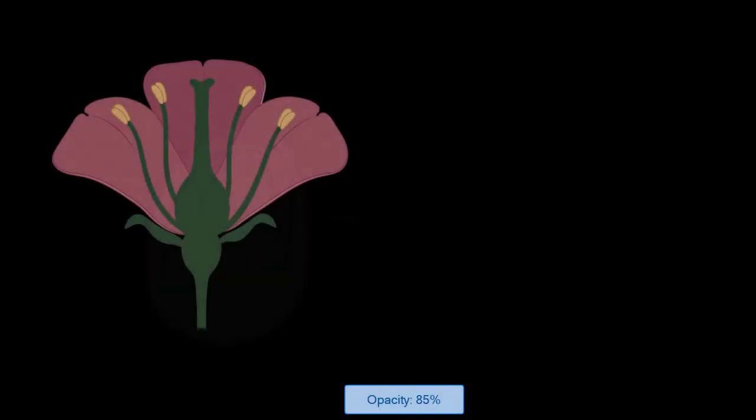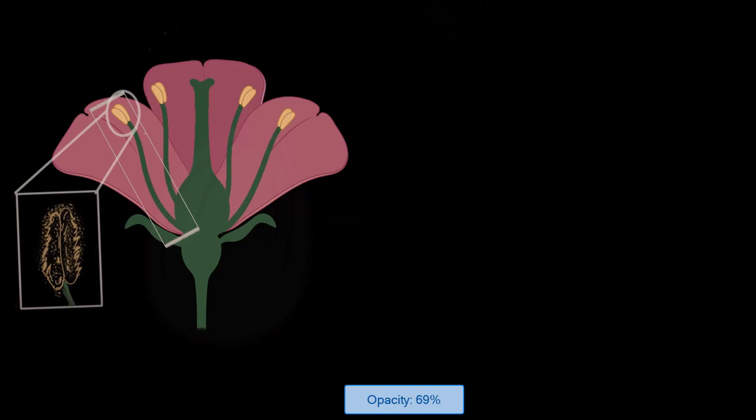In our previous videos we discussed the male reproductive part of a flower, which has the anther lobes and the long filamentous stamen. We also discussed that the male gametes, the pollens, are formed inside the anther lobes and how these pollens are released outside into the environment.